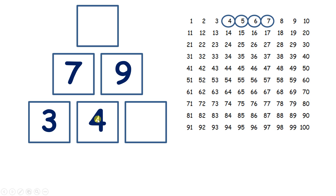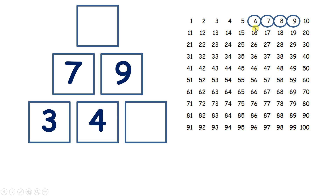Now you might be wondering, how can we find out which number to write in this square here? Well, we know four add something makes nine. So if we start on nine and count back one, two, three, four, we get to five. So we can write five next to four because four and five make nine.